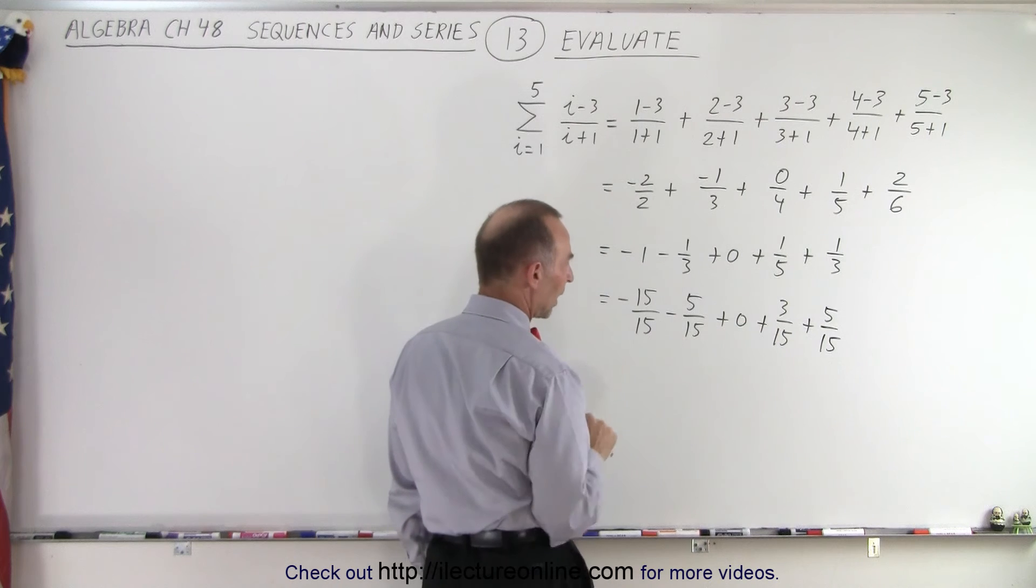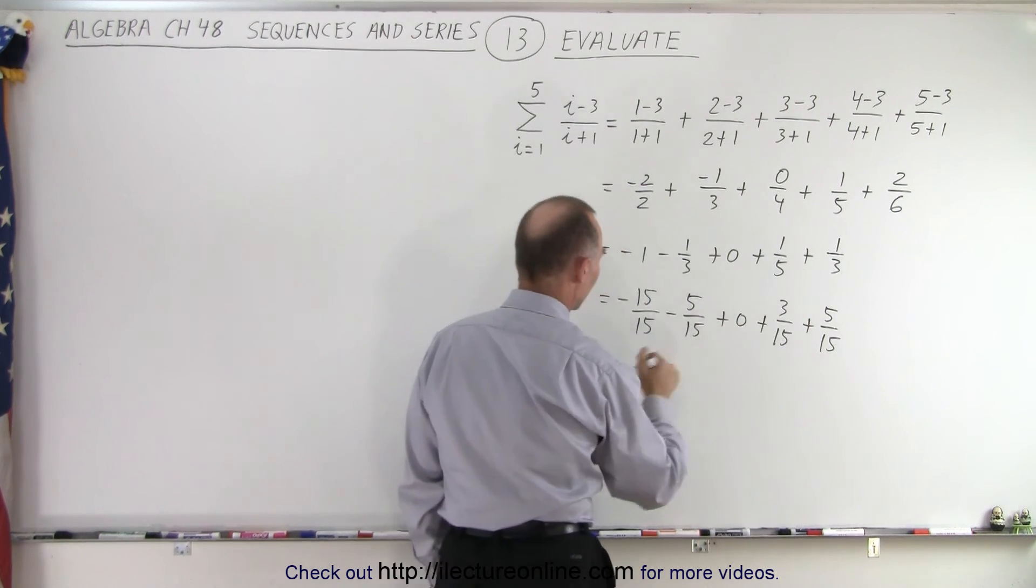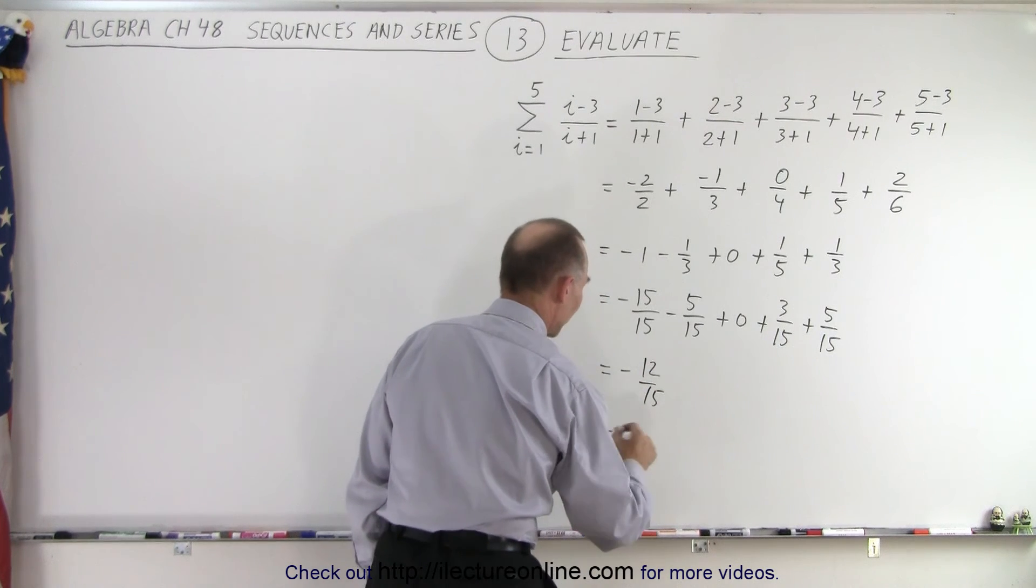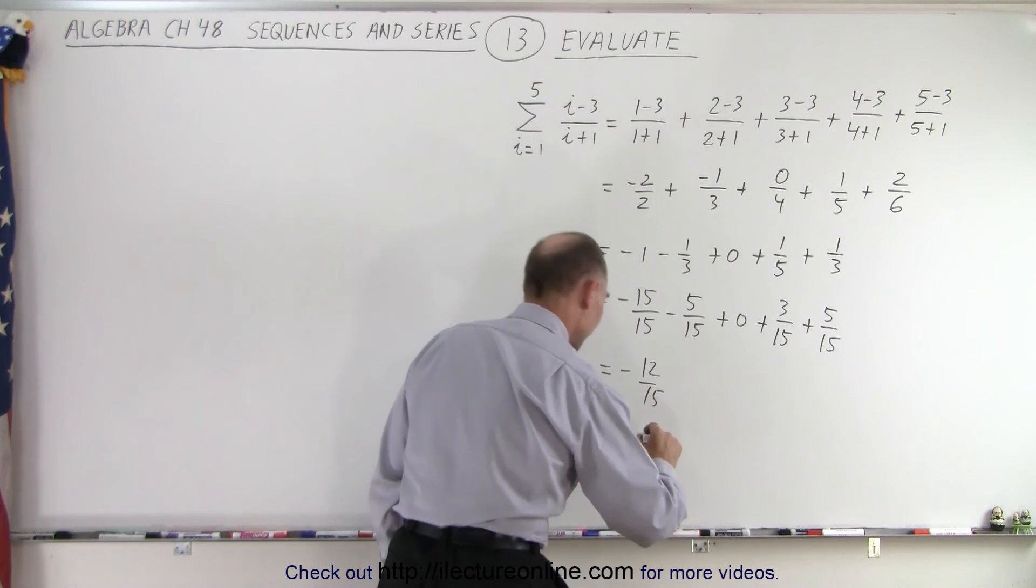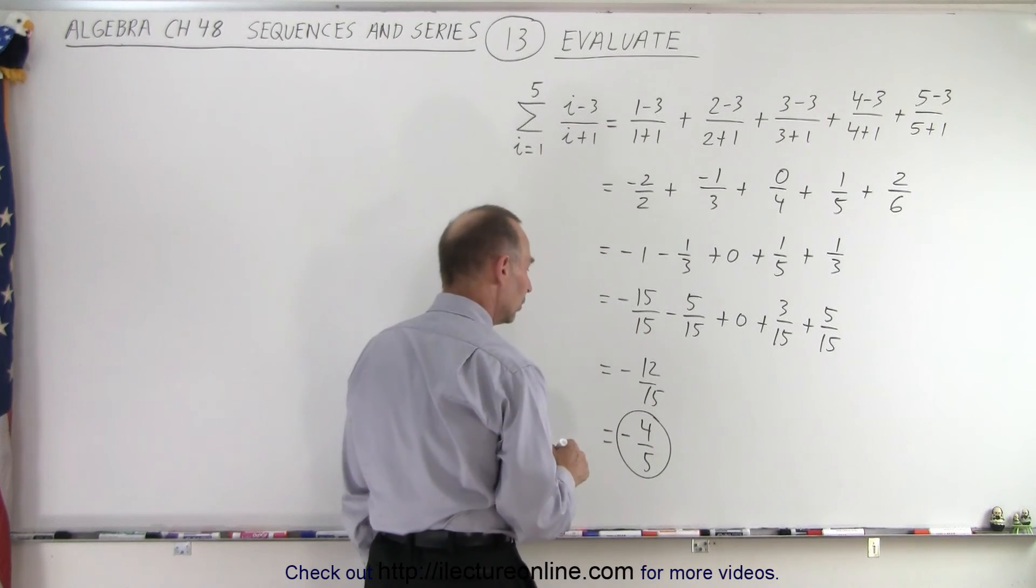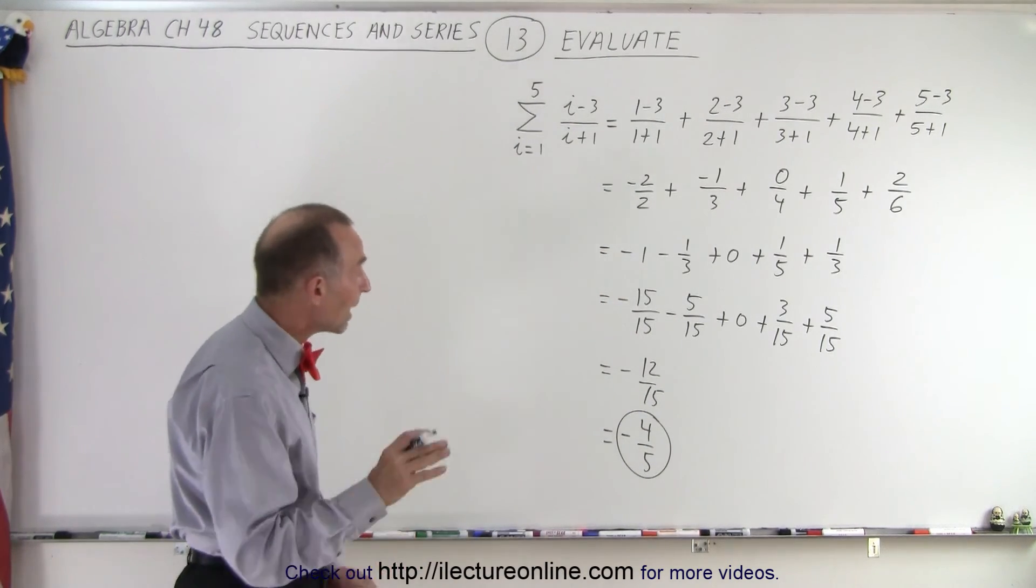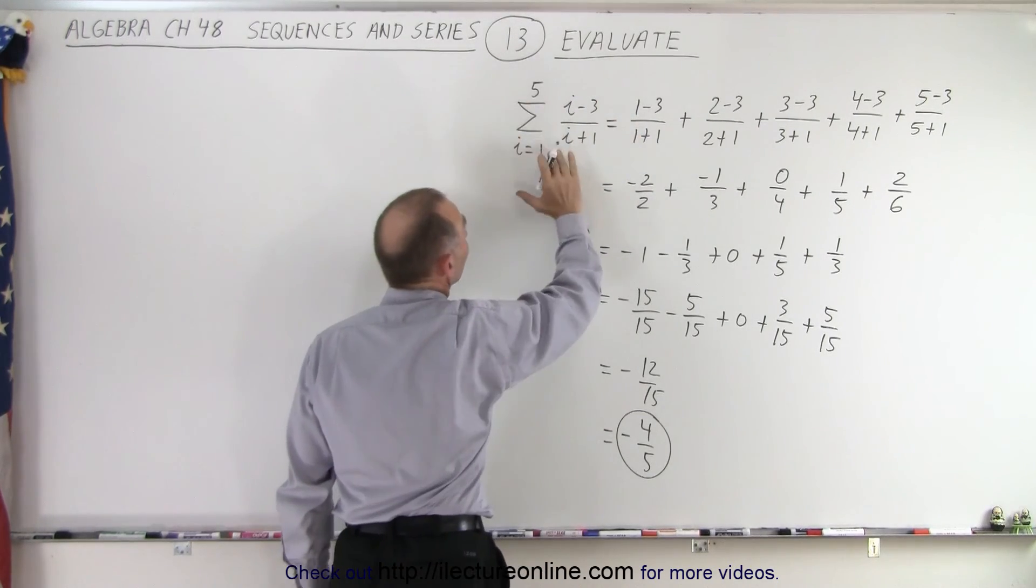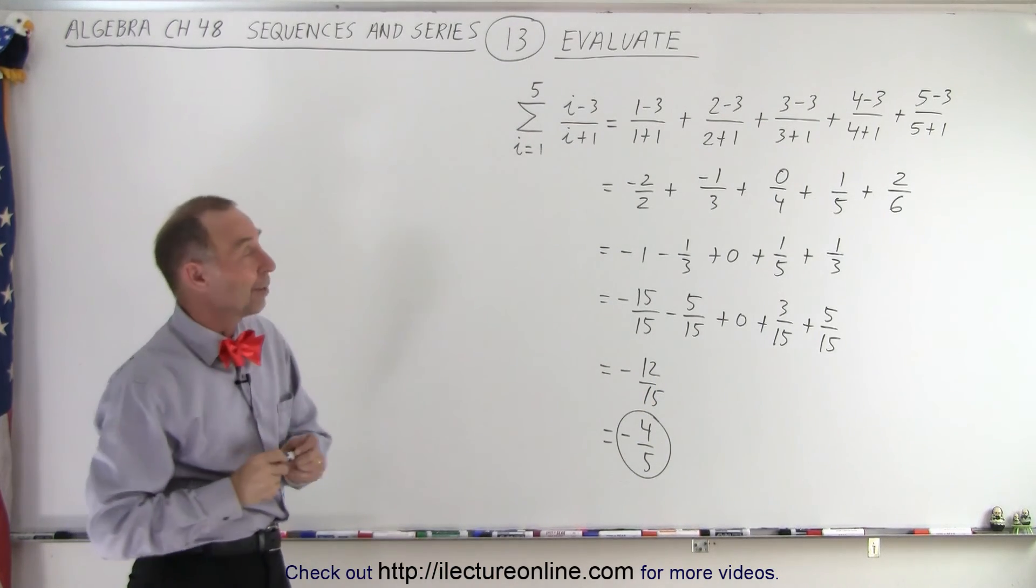Now everything is over a common denominator. We don't have to worry about the zero. That's minus 20 plus eight. That becomes minus 12 over 15, which can be simplified to minus four over five. And so that's four times three is 12. Four times five times three is 15. And now what we can say is that the evaluation of this is equal to minus four fifths. And that is how it's done.